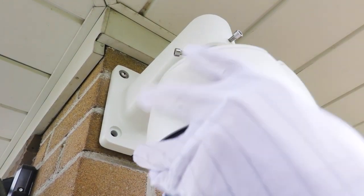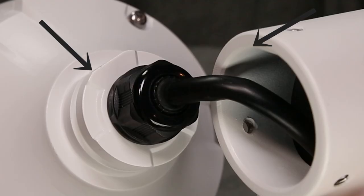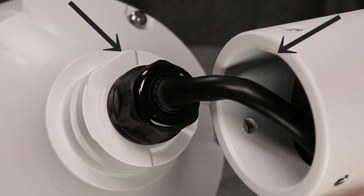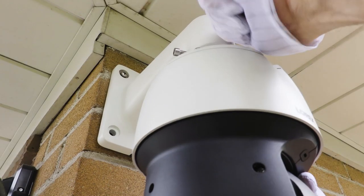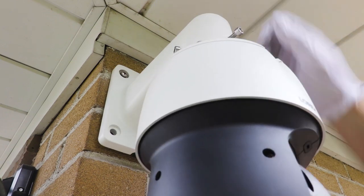You will need to align the flat section of the camera socket with the flat area on the arm mount in order to insert the camera correctly. Hand tighten the Allen bolts and use the supplied Allen key to tighten the bolts completely.